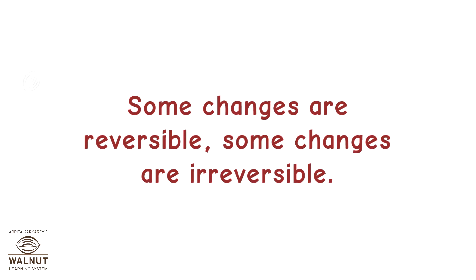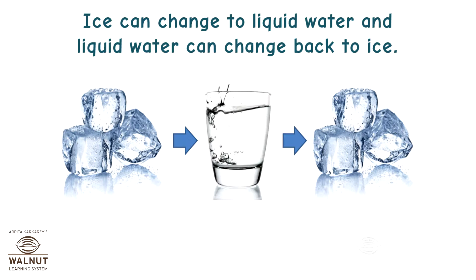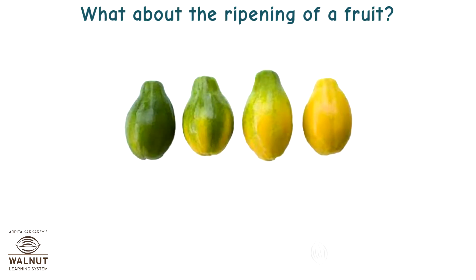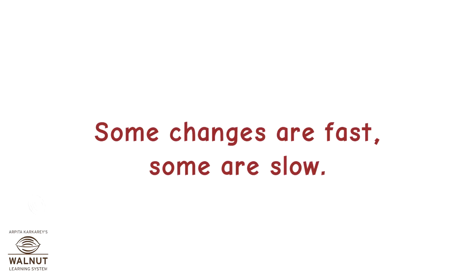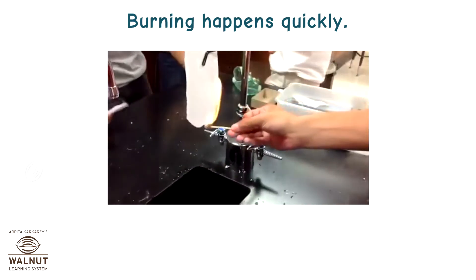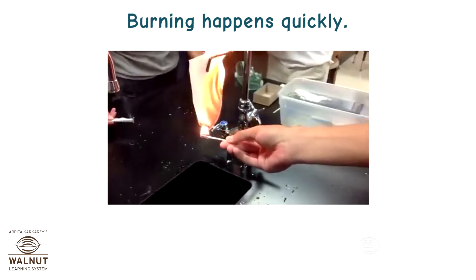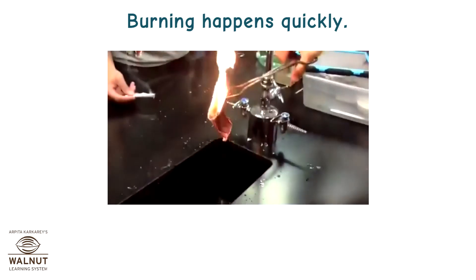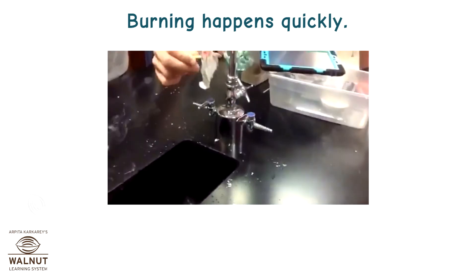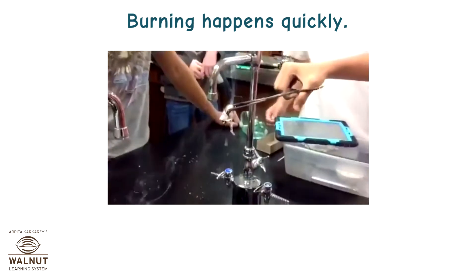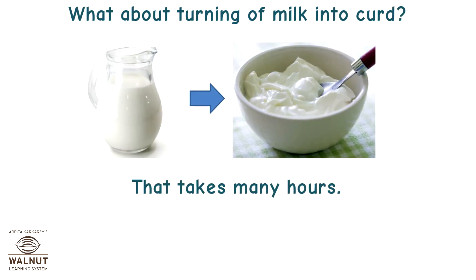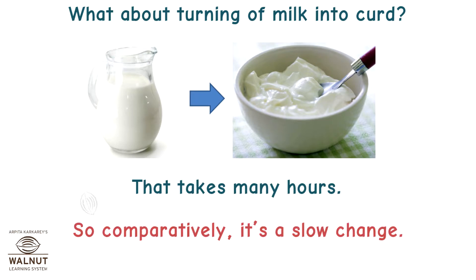Some changes are reversible, some are irreversible. Ice can change to liquid water and liquid water can change back to ice — that is a reversible change. What about the ripening of a fruit? It is not reversible. Some changes are fast, some are slow. Burning happens quickly — it's a fast change. What about turning milk into curd? That takes many hours, so comparatively it's a slow change.